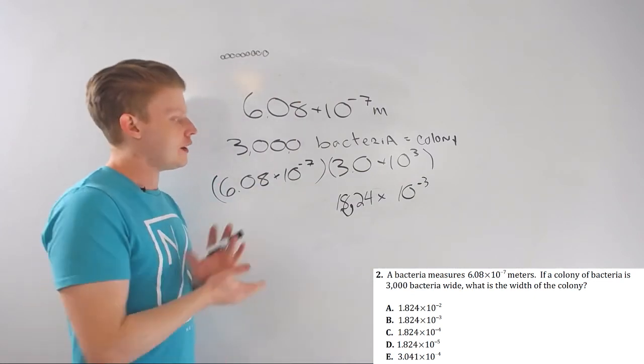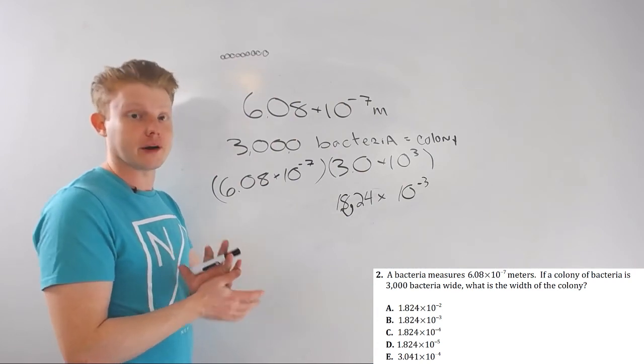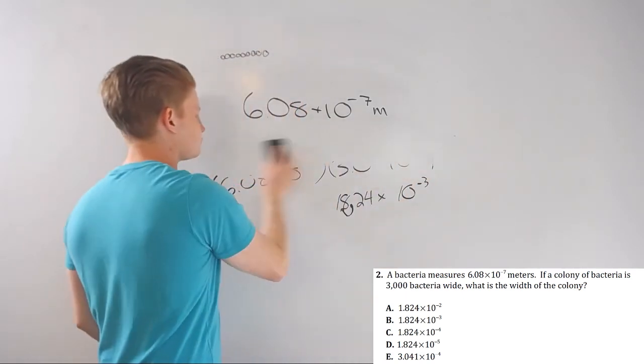So, when I make numbers smaller, I have positive exponents. When I make numbers bigger, I have negative exponents. And let's go ahead and do this really quickly.